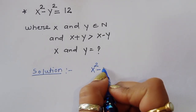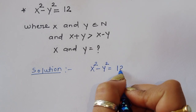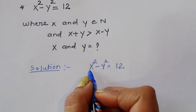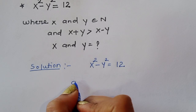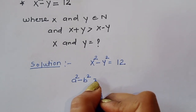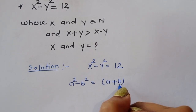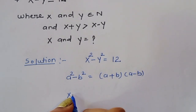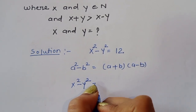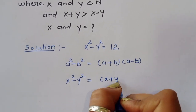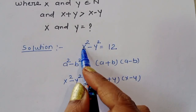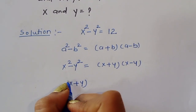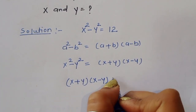Solution: x² - y² = 12. This is the given question. We can use the formula a² - b² = (a + b)(a - b). Using this formula, we get x² - y² = (x + y)(x - y). So we can write: (x + y)(x - y) = 12.